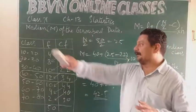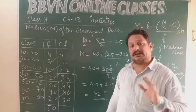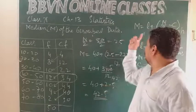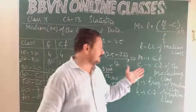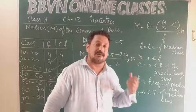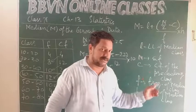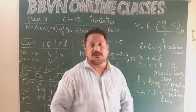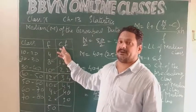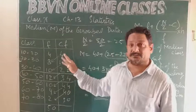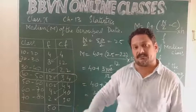So this is how we find the median of any grouped data. This is the formula. I have mentioned everything: what L stands for, what N stands for, what is small C, what is F, what is H. Apply the formula. The only extra column that you need to create is the column of cumulative frequency. Okay children, in the next class we shall discuss some more.